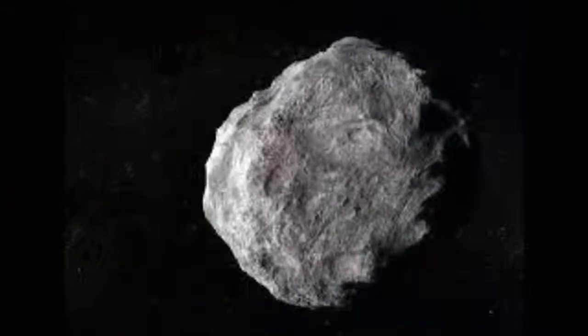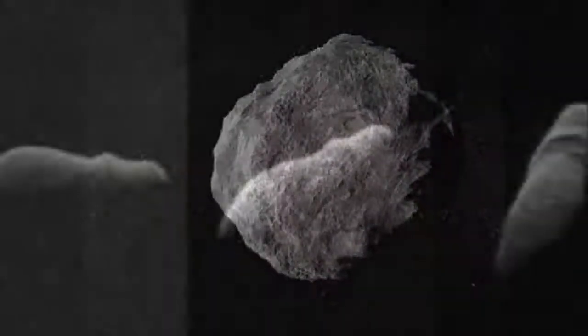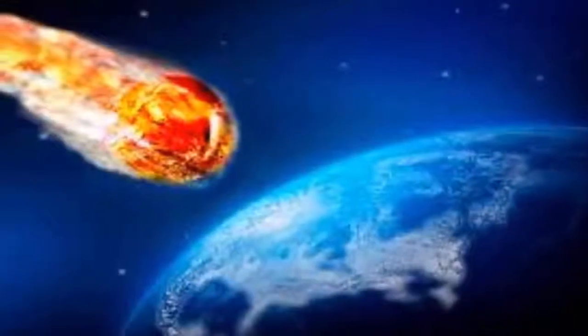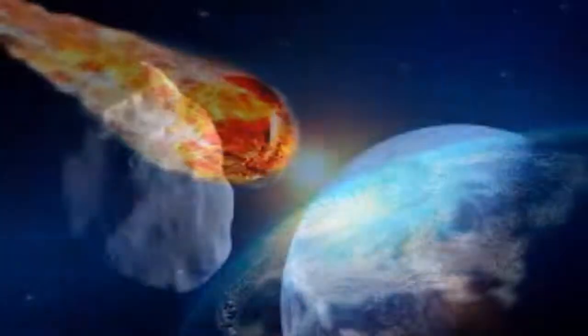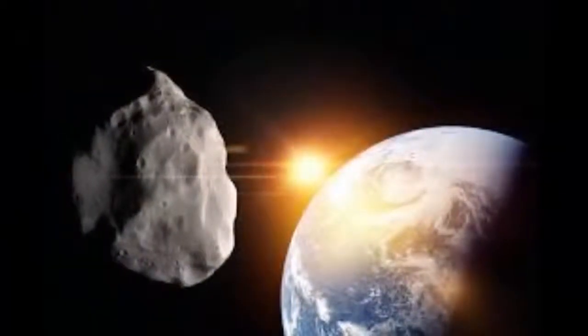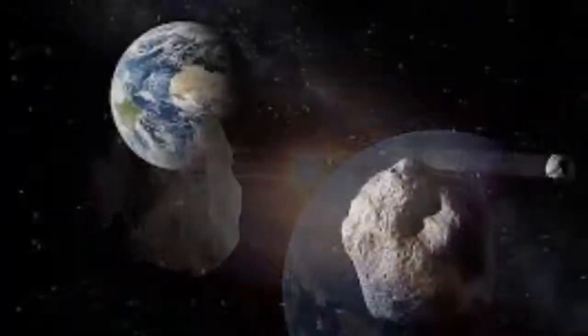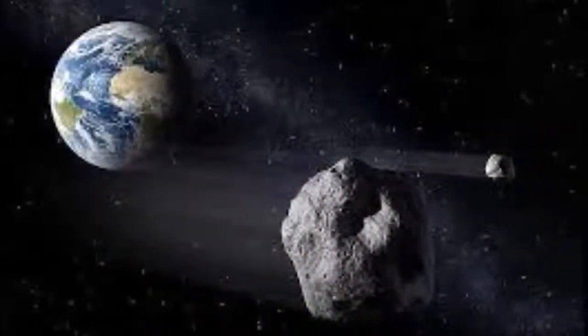All rocks which orbit the Sun from a distance of 1.3 astronomical units are ranked as NEOs. 1.0 AU is the distance from Earth to the Sun, approximately 93 million miles or 149.6 million kilometers. This might seem like a lot to us on Earth, but on the grand scale of the cosmos, the distance is insignificant.